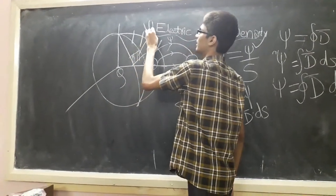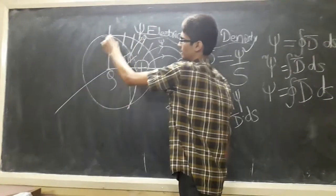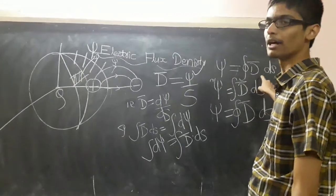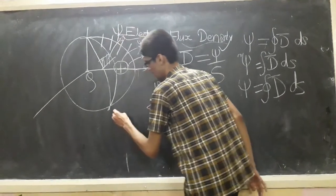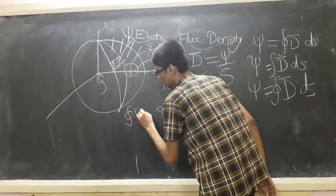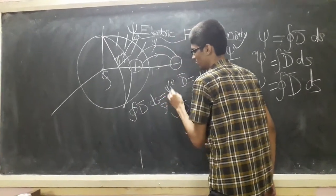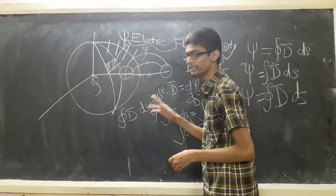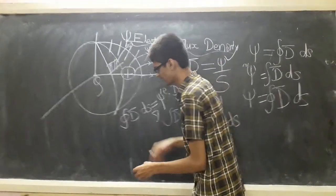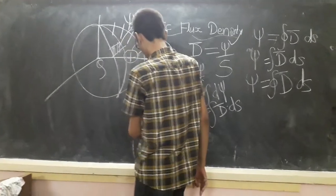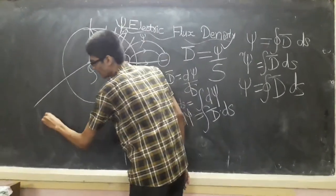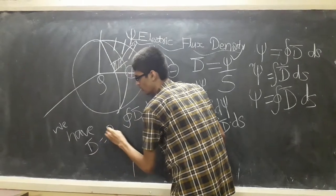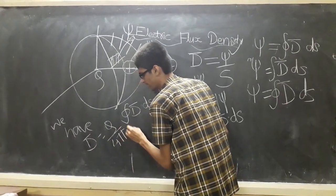On the left side we have seen that psi is going to be the closed surface integral of D-bar dot ds. So in this case D-bar dot ds equals psi. D-bar is equal to Q upon 4 pi r-squared in the a-r direction.